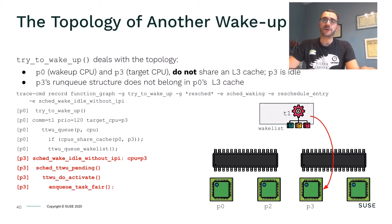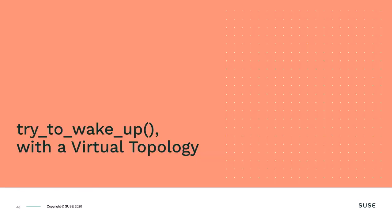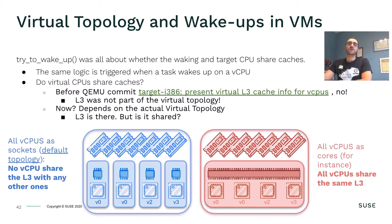So why are we talking about all this? This is a nice example of how the system topology can have effects that go beyond what one usually and easily attributes to it. This was all about bare metal, but we are at KVM Forum, which is about virtualization. Do the virtual CPUs of our VMs share an L3 cache? A few years ago the answer would have been an outright no — QEMU was not including any L3 cache in the description of the virtual topology. Now it does, and interestingly the reason it was added was exactly that TryToWakeUp behavior.